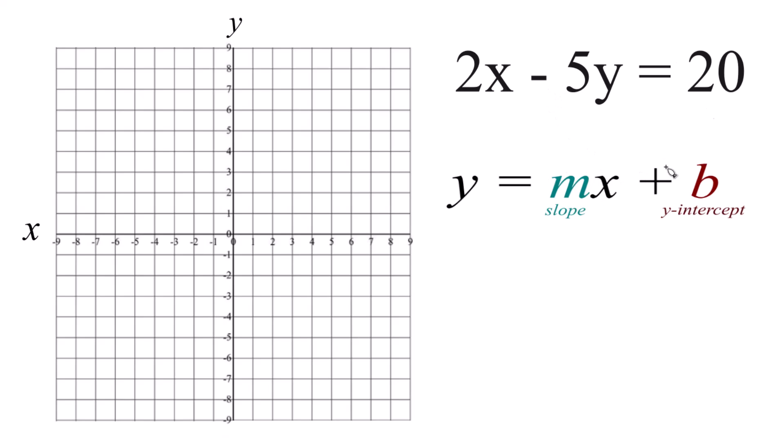So what we need to do is we need to get our equation here, 2x minus 5y equals 20, into slope intercept form. So let's do that.